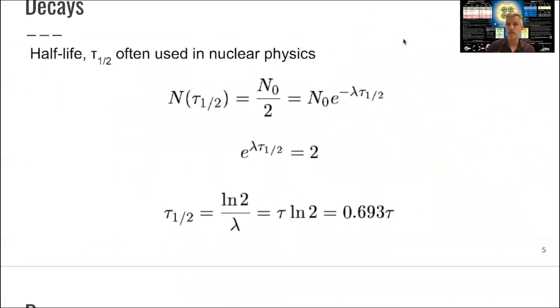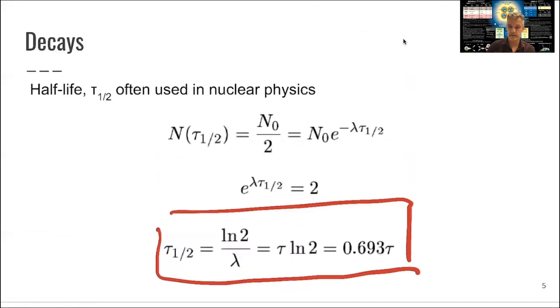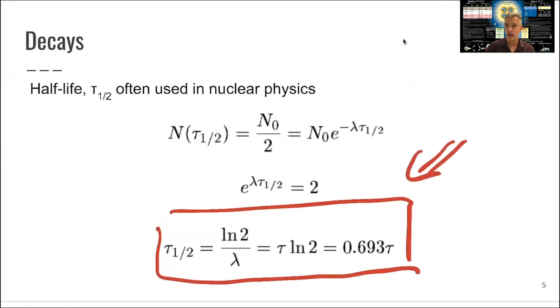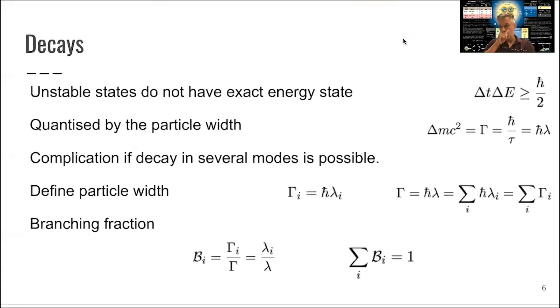In nuclear physics, one often talks about the half-life time of the particle or of a specific nucleus. That's given by the time it takes for half of the particles to decay. So N of tau one-half is equal to the initial number of particles divided by 2. You find then that this half-life is related to the lifetime of the particle with a factor of about 2/3. This leads to some confusion in numerical values sometimes.